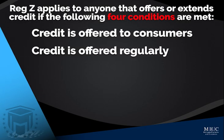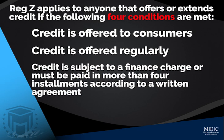Number two: the credit is offered regularly. If this is your profession and you're going to do this often, you've met that second condition as well. Number three: the credit is subject to a finance charge — interest. We charge interest in what we do, and it must be paid in more than four installments. On a mortgage, it's going to take a lot more than four payments.